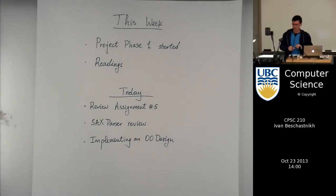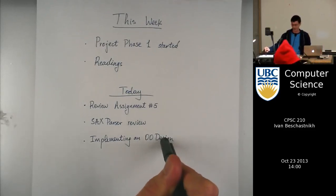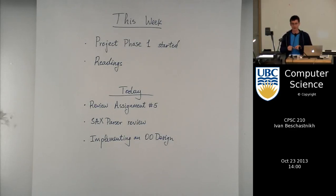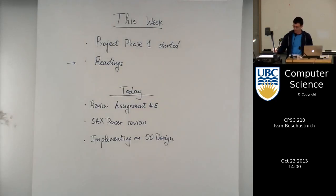All right, so assignment number five, then we're going to talk about the SACS parser, and then we're going to talk about implementing OO design. The theme of this week is that the project has started, so we're going to be covering the things you need to get the project done. SACS parsing was one of those things we started on Monday, and the second half you need is implementing OO design. Today we'll start on it, and Friday we'll finish OO design.